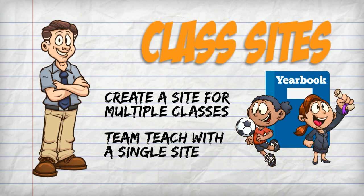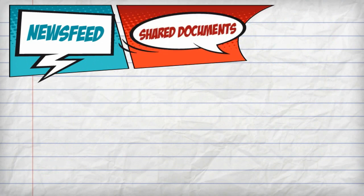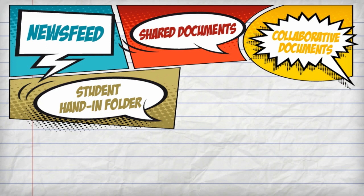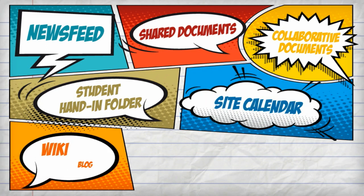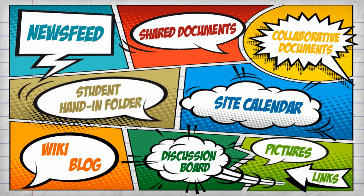By default, class sites contain a newsfeed, shared documents area, collaborative documents area, student hand-in folder, site calendar, a wiki, a blog, a discussion board, and a library for pictures and links.